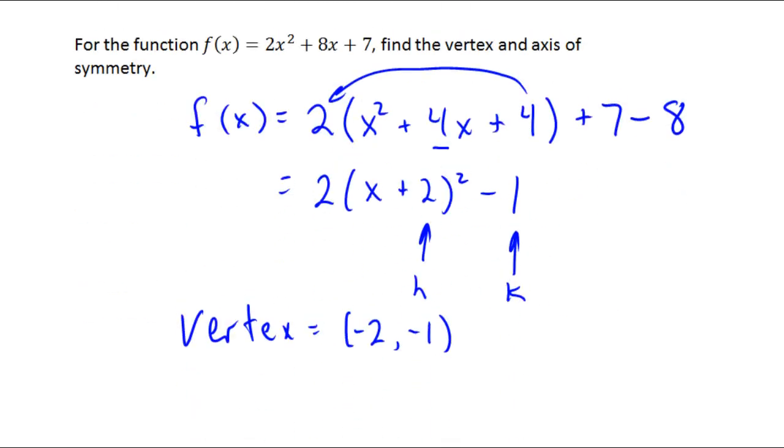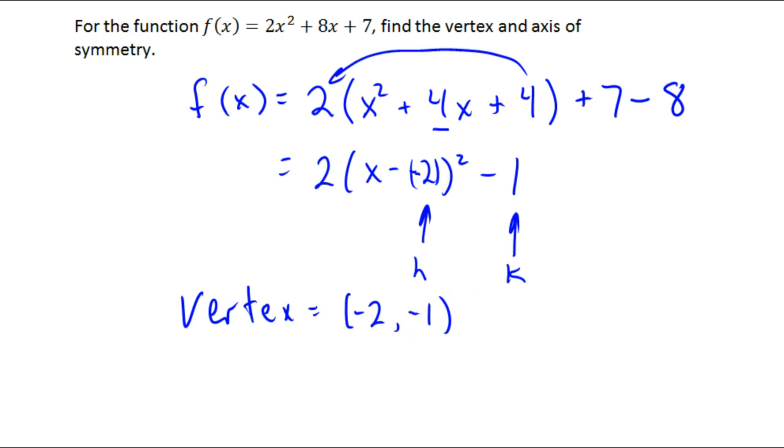This is really x minus a negative 2, like that. So the vertex is always the opposite of what it looks like in the equation for h. What about the axis of symmetry? Well, remember that's always going to be x equals h. So x equals negative 2 is your axis of symmetry.